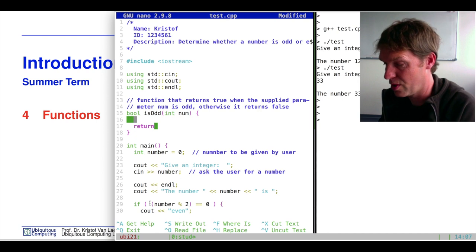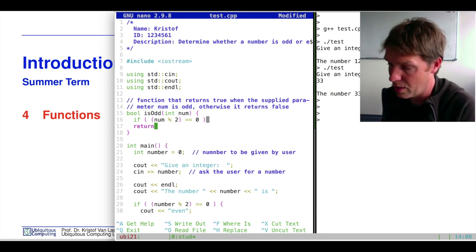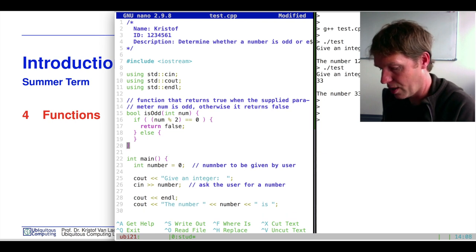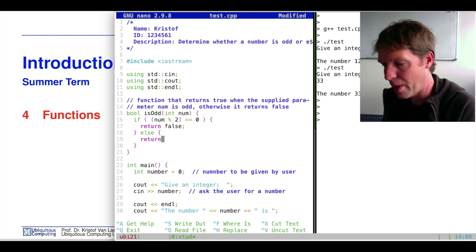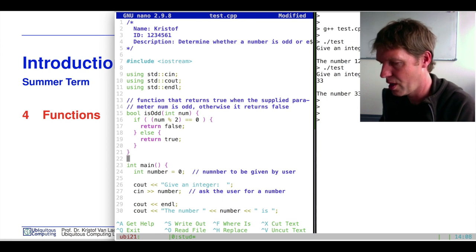Since it returns a Boolean, we have to return something. What we return is actually directly what the function will be about. Instead of testing with the if statement in main, we're going to put this here. If our num modulo 2 ends up with a zero, then we know that's even, so it's definitely not odd, so we have to return false. Else we return true.